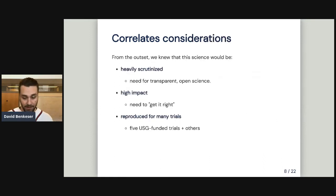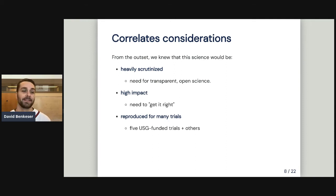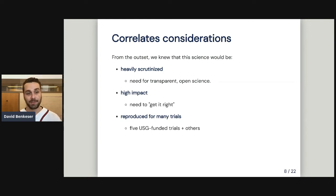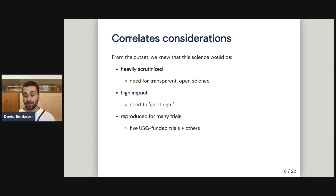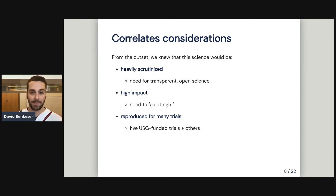When we were first planning for these studies, our group had expertise in correlates analyses for many years related to HIV vaccines, dengue vaccines, and so forth. But COVID is obviously a very unique situation. From the very beginning, we knew the work was going to be heavily scrutinized. In the summer of 2020, there was a big press for companies to release their clinical trial protocols, which they did — giving us an idea that the public was going to be very interested in these results. When we're talking about developing an immune correlate — creating a shortcut for approving vaccines — that's going to be even more heavily scrutinized. We needed to be committed to doing this all in a very open, robust, and transparent way.